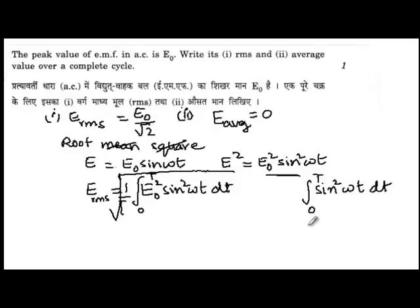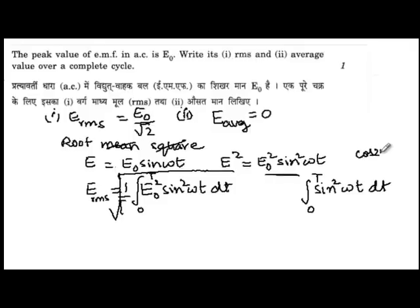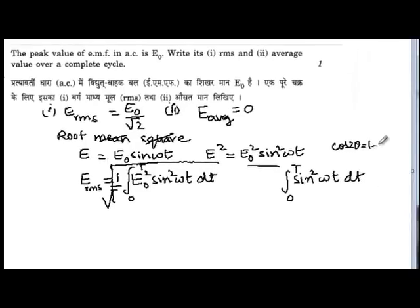First of all, we'll use the identity that cos 2θ = 1 - 2 sin² θ. So we can write this as ½(1 - cos 2ωt) dt from 0 to T.